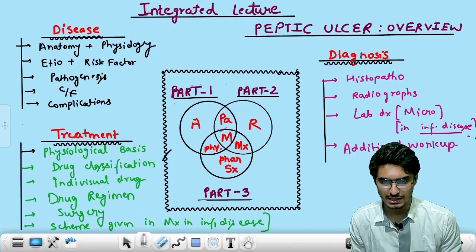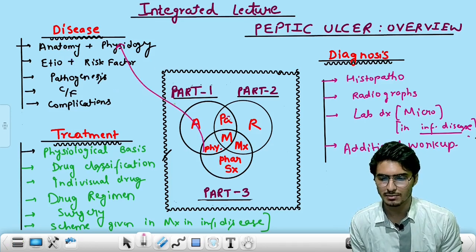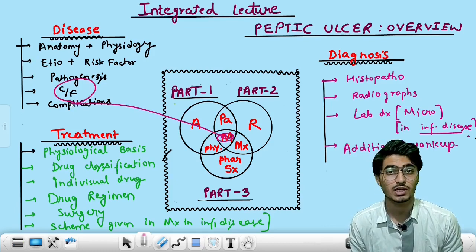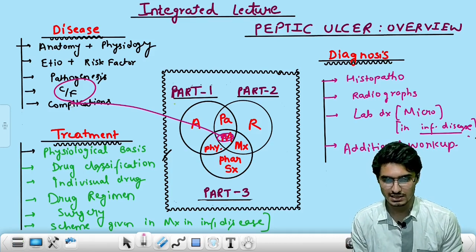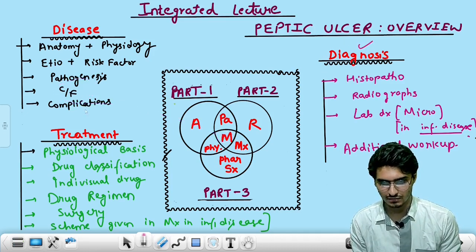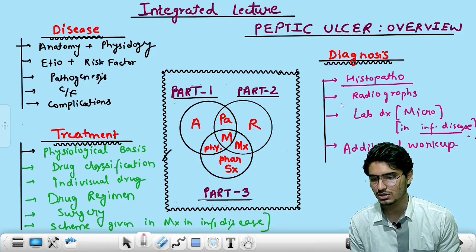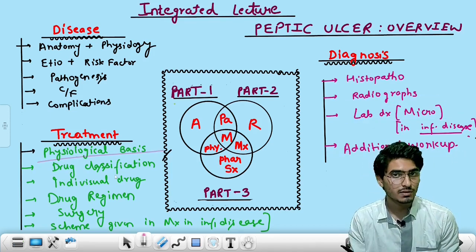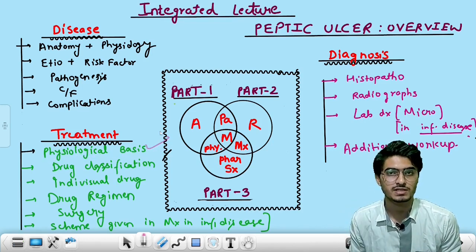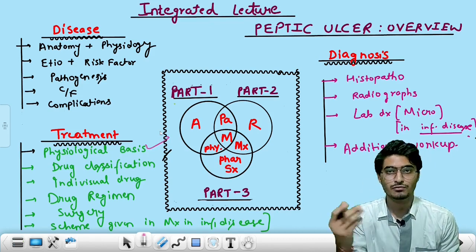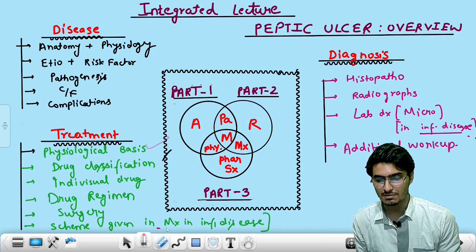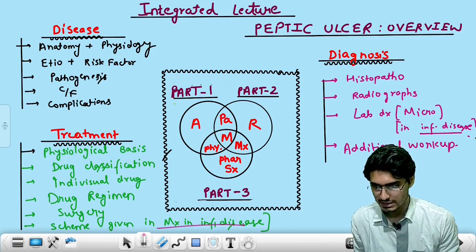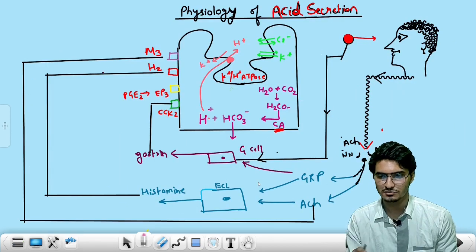Pathology and medicine are the main goals. Anatomy is discussed here, physiology is discussed here, and the whole portion coming from pathology — that is what medicine is. Basically, the presentation of the patient is explained under medicine in this part one. In part two, diagnosis and treatment will be there. Histopathology, radiographs, lab diagnosis of microbiology, and additional workups coming from medicine will be discussed here. From the treatment part: physiological basis, drug classification, individual drugs, drug schemes, and surgery.